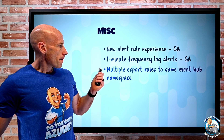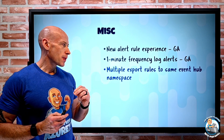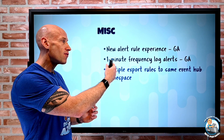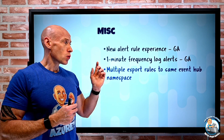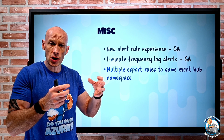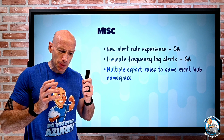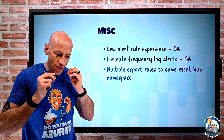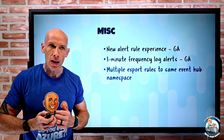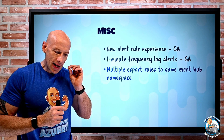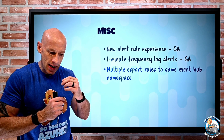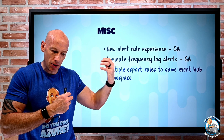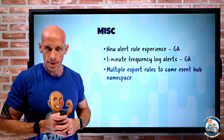Multiple export rules to the same event hub namespace are now possible. When I create diagnostic settings, I specify targets in groups of settings — a log analytics workspace, storage account, or event hub — and I can have multiple sets. Now I can have multiple sets of configurations going to the same event hub namespace. The event hub namespace is a management container with the network endpoint and protection settings, and within it you have the event hubs themselves — like topics in Kafka terminology. As part of the rule, I can now use an optional parameter for the event hub name, so different export rules can go into the same namespace with different event hub names within it.